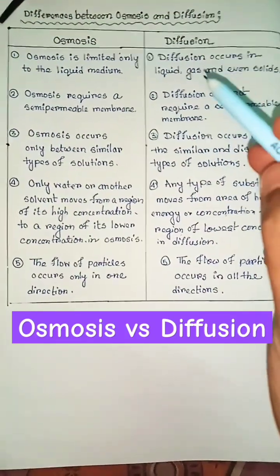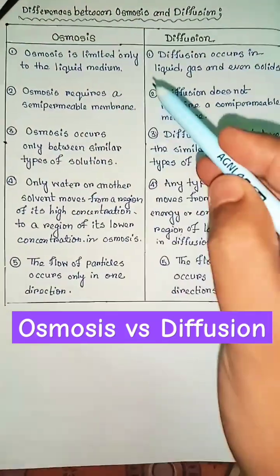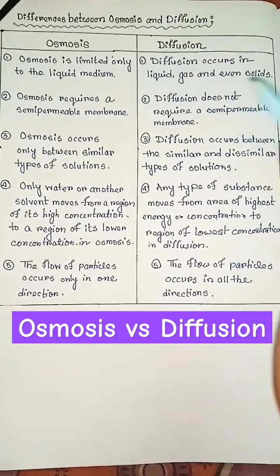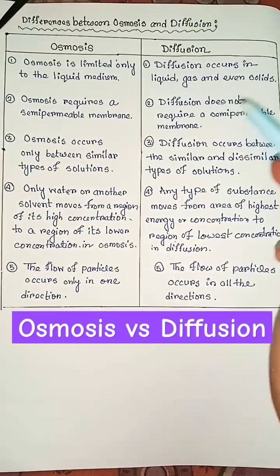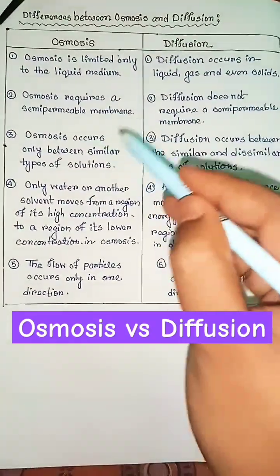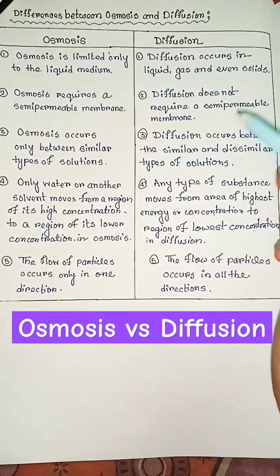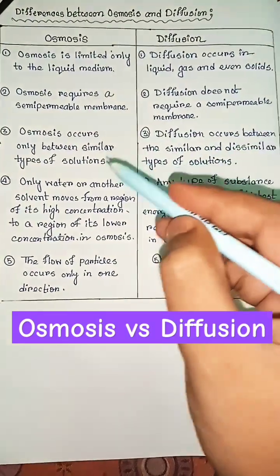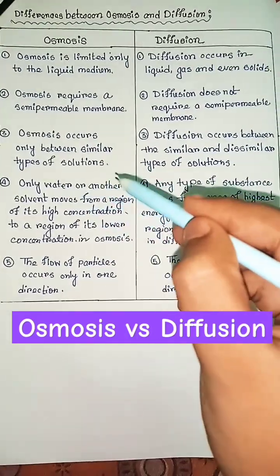Differences between osmosis and diffusion: osmosis is limited only to the liquid medium, but diffusion occurs in liquid, gas, even solids. Osmosis requires a semi-permeable membrane, but diffusion does not require a semi-permeable membrane.